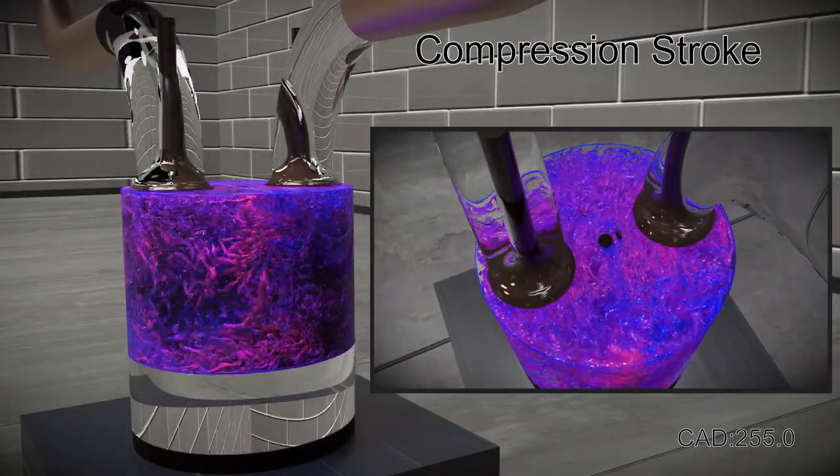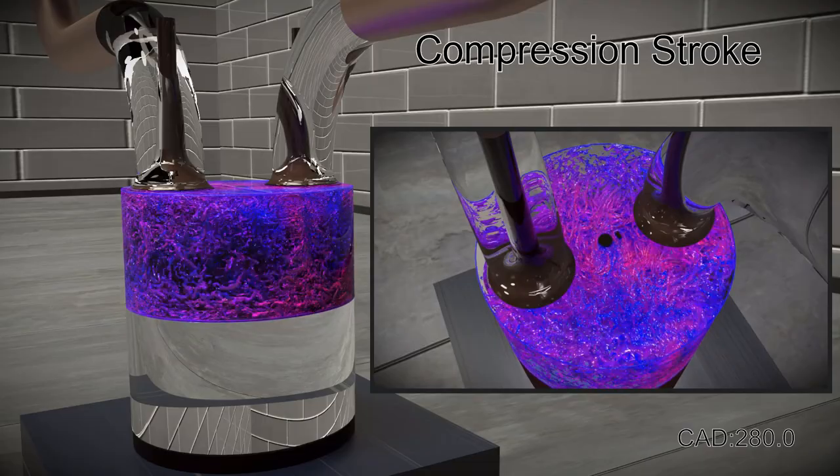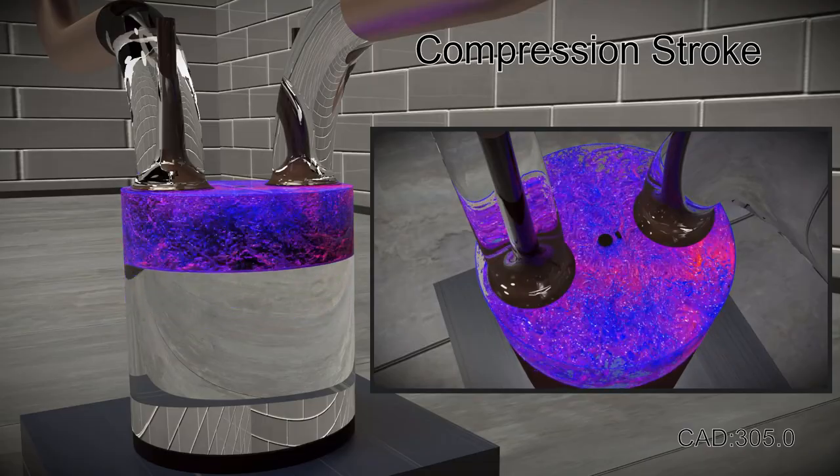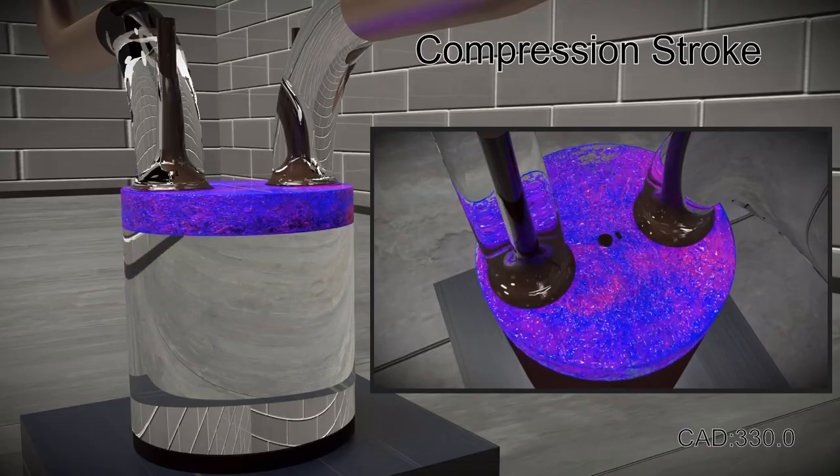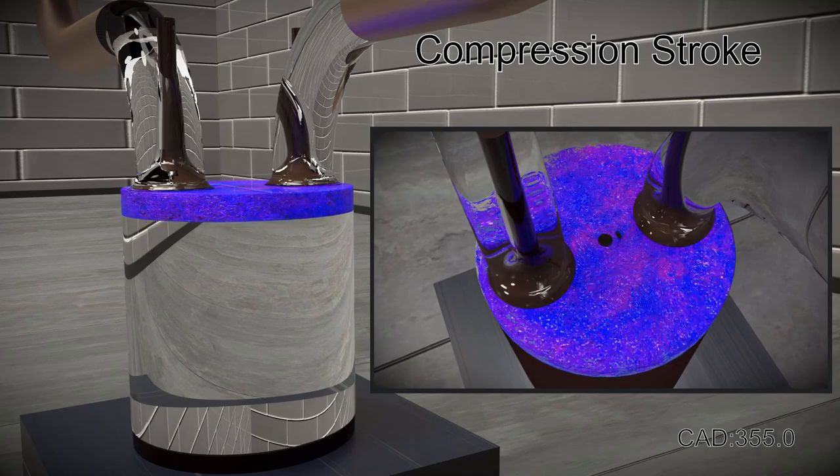During the compression stroke, the valves are completely closed as the piston moves up towards the top of the cylinder. This compresses the air trapped from the intake stroke and increases the turbulent intensity of the air.